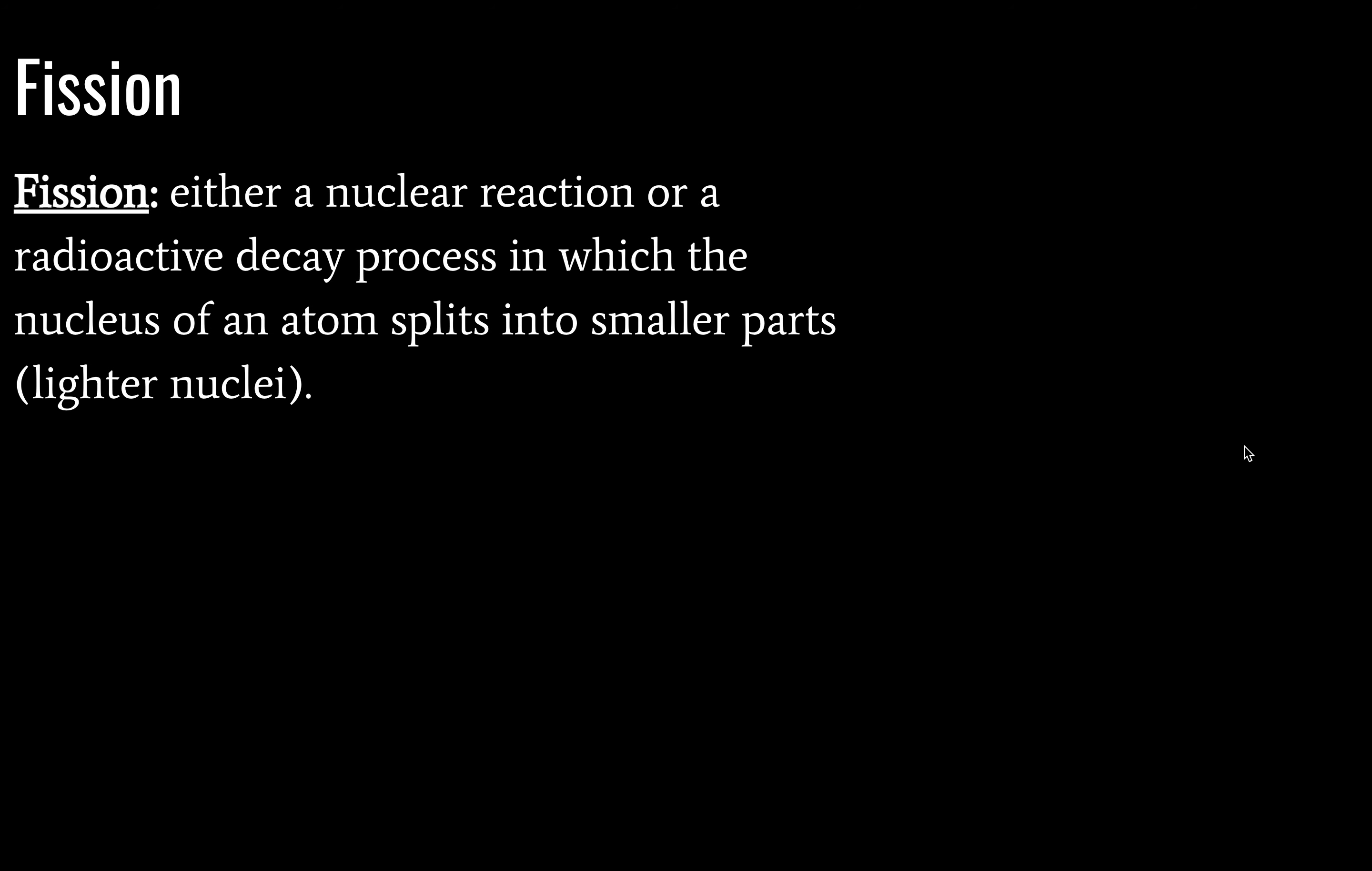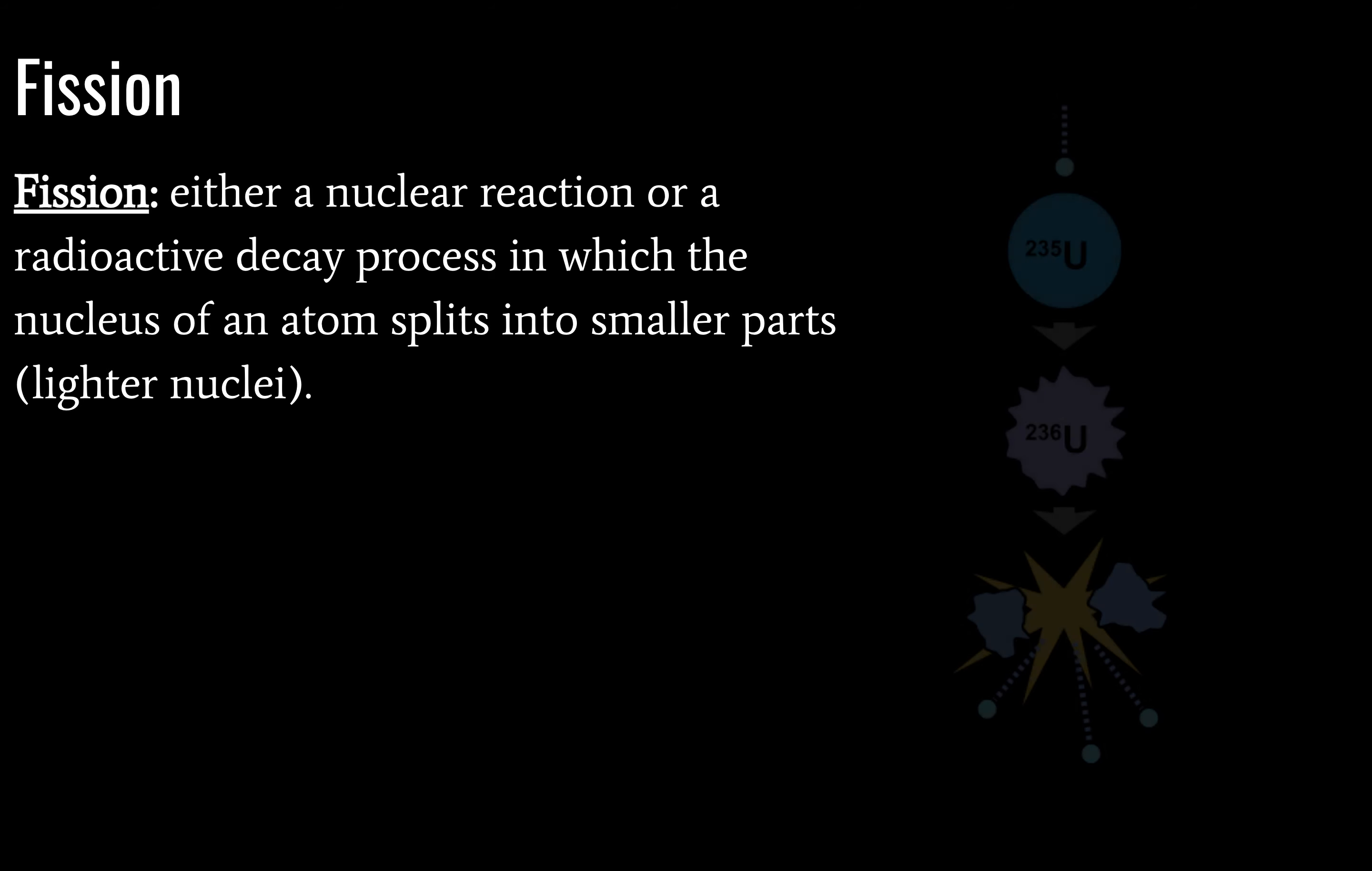Fission looks a little bit different. Fission is a nuclear reaction or radioactive decay process in which the nucleus of an atom splits into smaller parts. We've already seen fission in topic 7.1. Here we have uranium-235 becoming uranium-236 with the addition of a neutron, and then splitting off into two new isotopes and more neutrons. Later on in topic 7.2, we will look at this reaction in more detail.